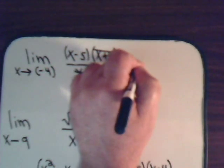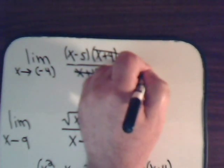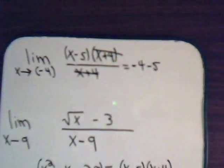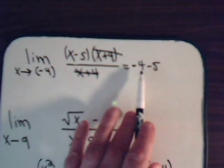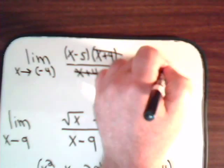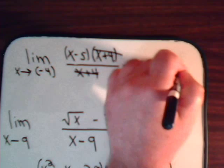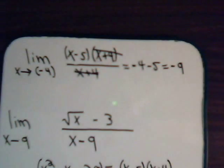So we have minus 4 minus 5. And that should be minus 4 plus minus 5. So for this problem, we get that limit to equal minus 9.